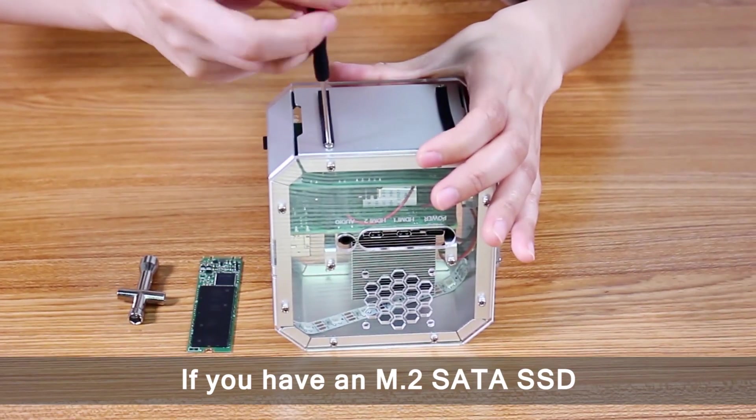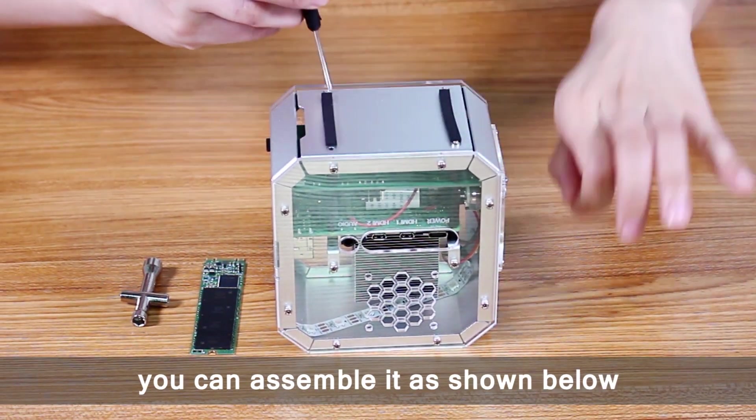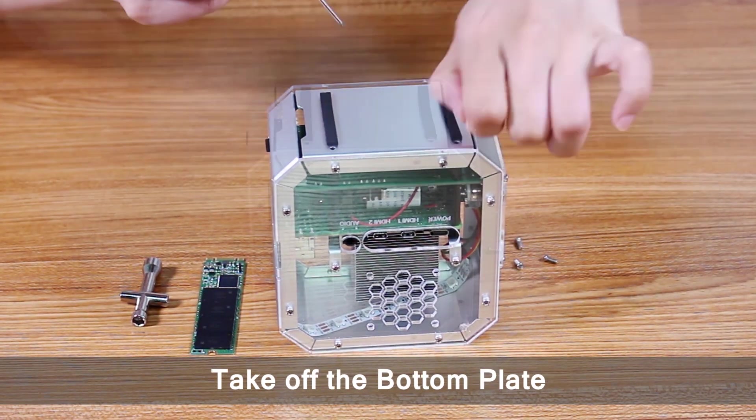If you have an M2 SATA SSD, you can assemble it as shown below. Take off the bottom plate.